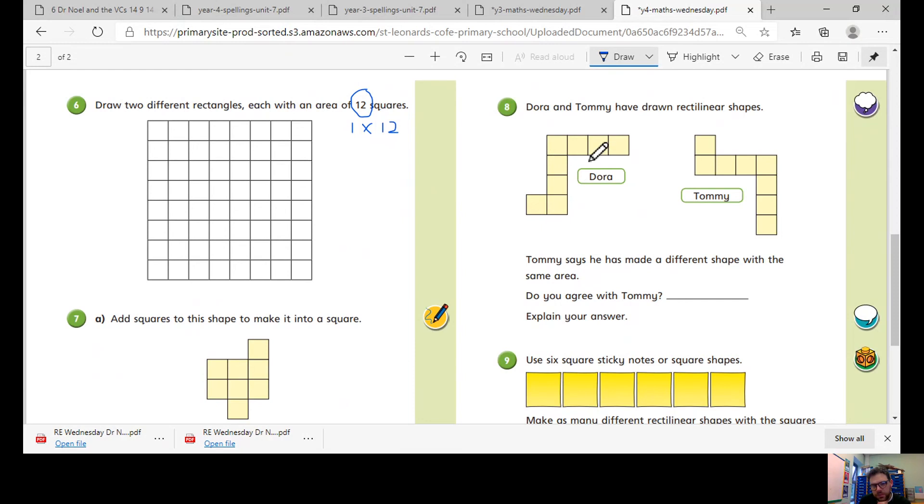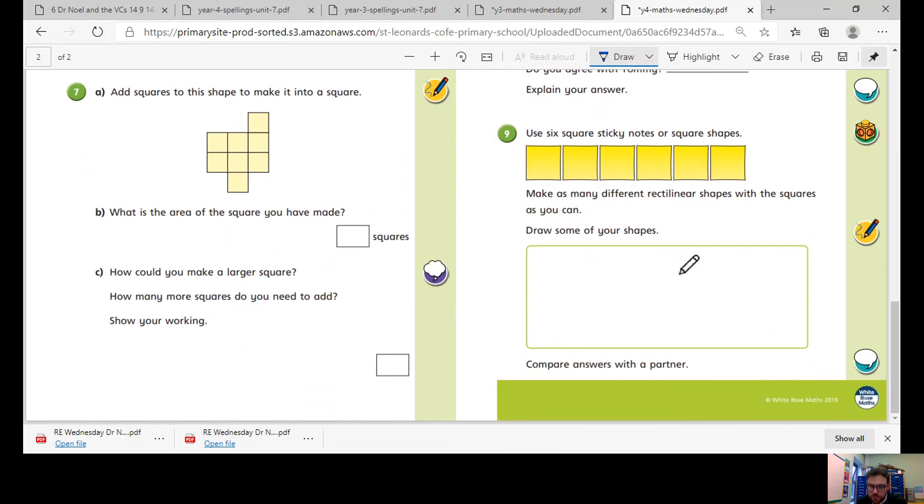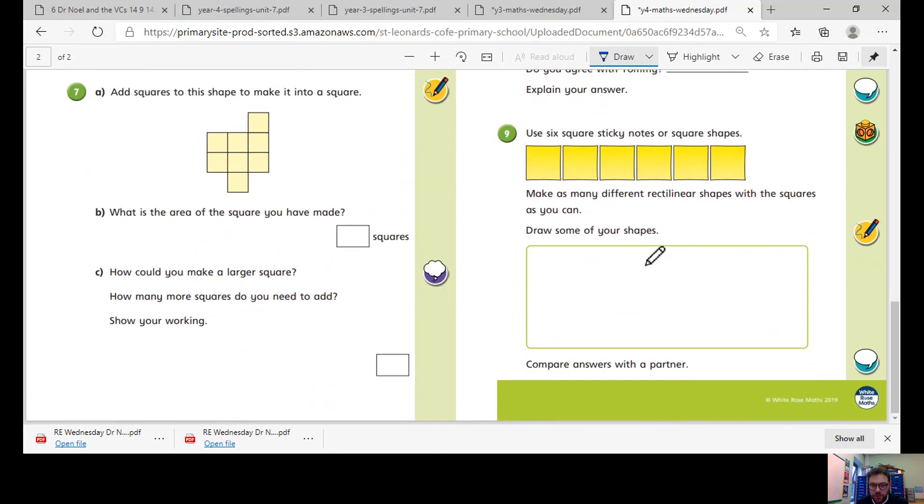Use six square sticky notes or square shapes, make as many different rectangular shapes with the squares as you can. So it's always good to do practically, so cut some out, use them on your table, draw some more shapes below, and show me on Dojo.